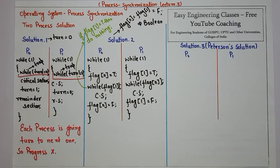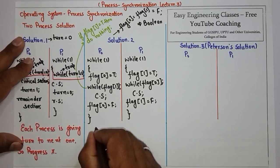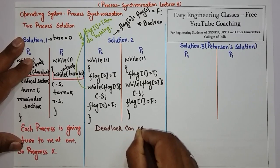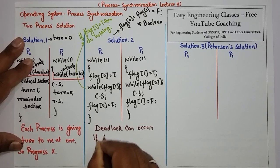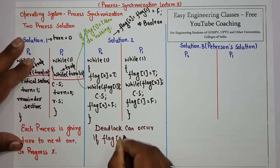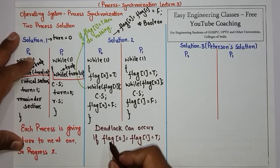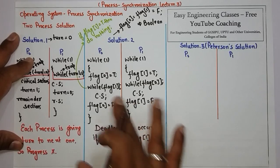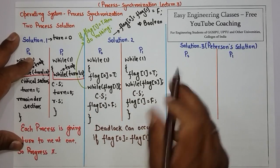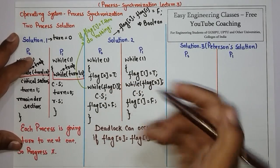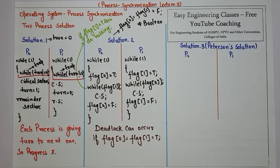However, the problem present in this solution is that deadlock can occur. Deadlock happens if flag[0] equals true and flag[1] equals true simultaneously — both processes will be trapped in their entry sections in a deadlock situation. So this solution is also not the best solution for the two process problem.